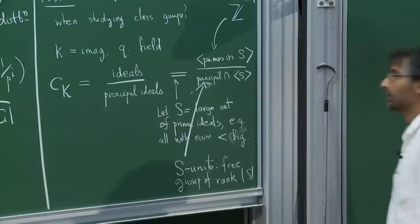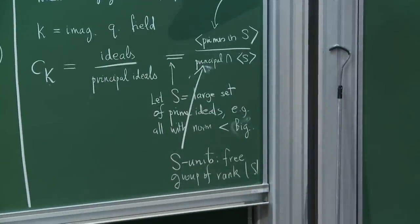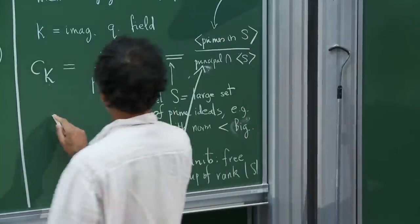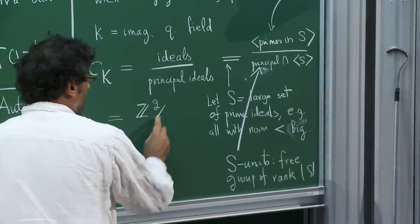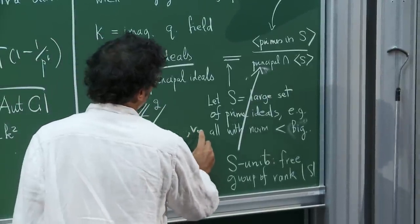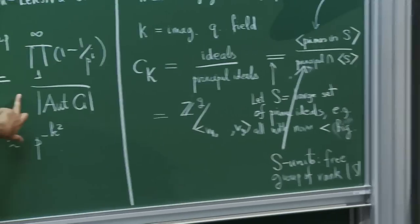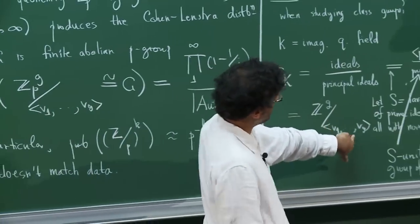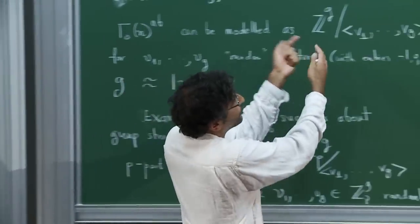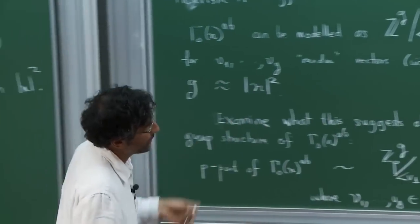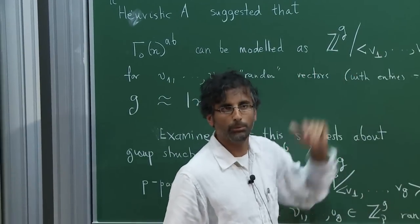That's where the imaginary quadratic is used — if it were real quadratic, you'd get rank |S| + 1. So the class group of an imaginary quadratic field is naturally presented as a quotient of a free abelian group modulo the same number of relations. That kind of explains heuristically why you should expect this distribution — there would need to be a conspiracy among these relations for it not to happen.